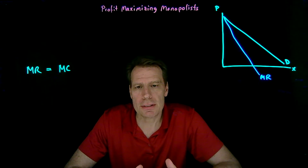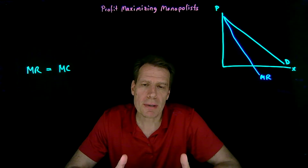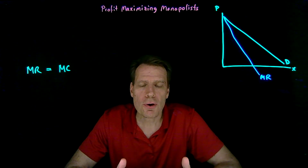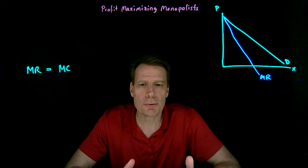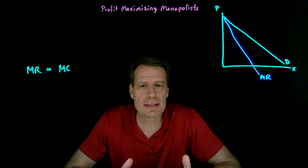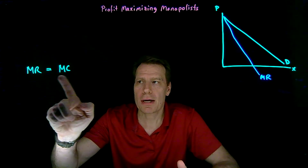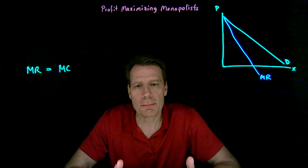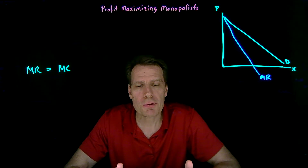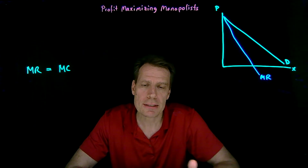For a price-taking firm, the second step of two-step profit maximization told us that the firm is going to stop producing where price is equal to marginal cost. That's a simple application of the rule that marginal revenue has to be equal to marginal cost, because for a price-taking, perfectly competitive firm, marginal revenue is equal to price. Each additional unit produced can be sold at the market price.